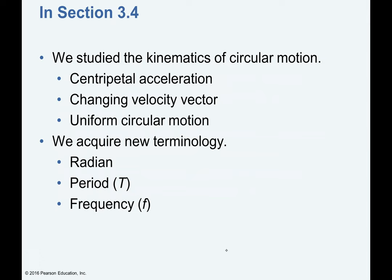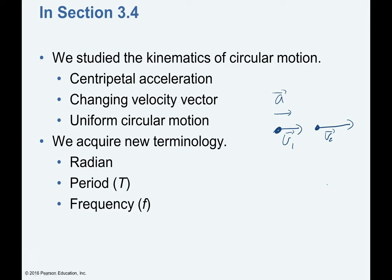We talked about centripetal acceleration in Chapters 2 and 3. If an object moves with some velocity and there is an acceleration parallel to that velocity, it changes the object's speed. If the acceleration is in the same direction as velocity, it speeds up; if in the opposite direction, it slows down. Both cases have acceleration and velocity parallel — or anti-parallel — to one another, which we can also call tangential.